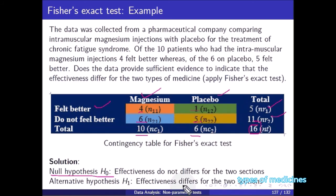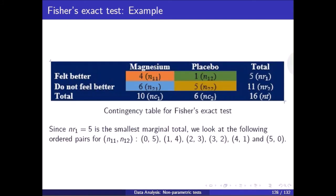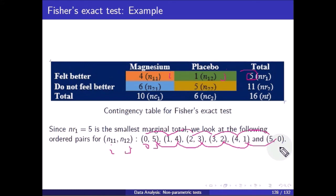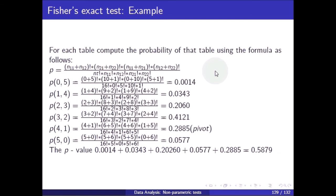Null hypothesis: effectiveness does not differ for the two types. Alternative: effectiveness differs. Identify ns: minimum of (5, 11, 10, 6) equals 5. So ns equals 5 is the smallest marginal total. We look at ordered pairs for n11 and n12, starting at (0, 5), incrementing i and decrementing j each step: (1,4), (2,3), (3,2), (4,1), (5,0). For each table, compute the probability using the formula.